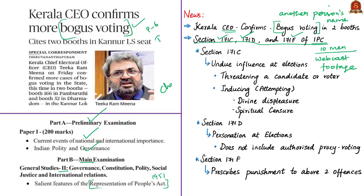Chapter 9A of the Indian Penal Code deals with offenses relating to elections and consists of nine sections. Section 171C deals with undue influence at elections. Any person who voluntarily interferes or attempts to interfere with the free exercise of any electoral right commits the offense of undue influence at an election.